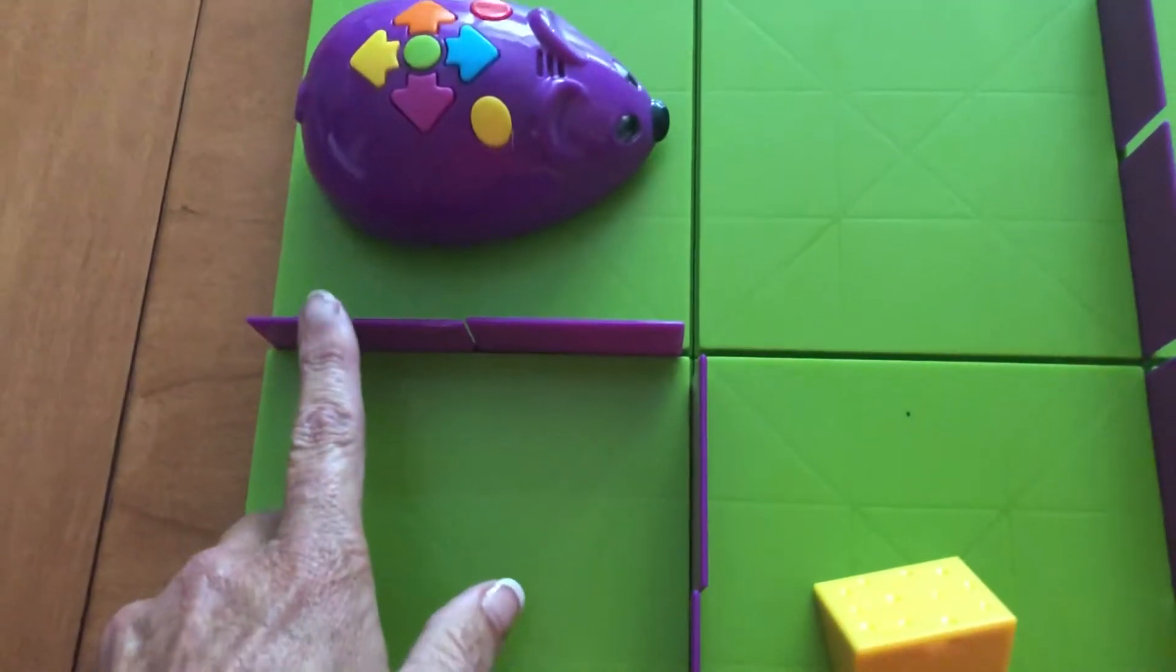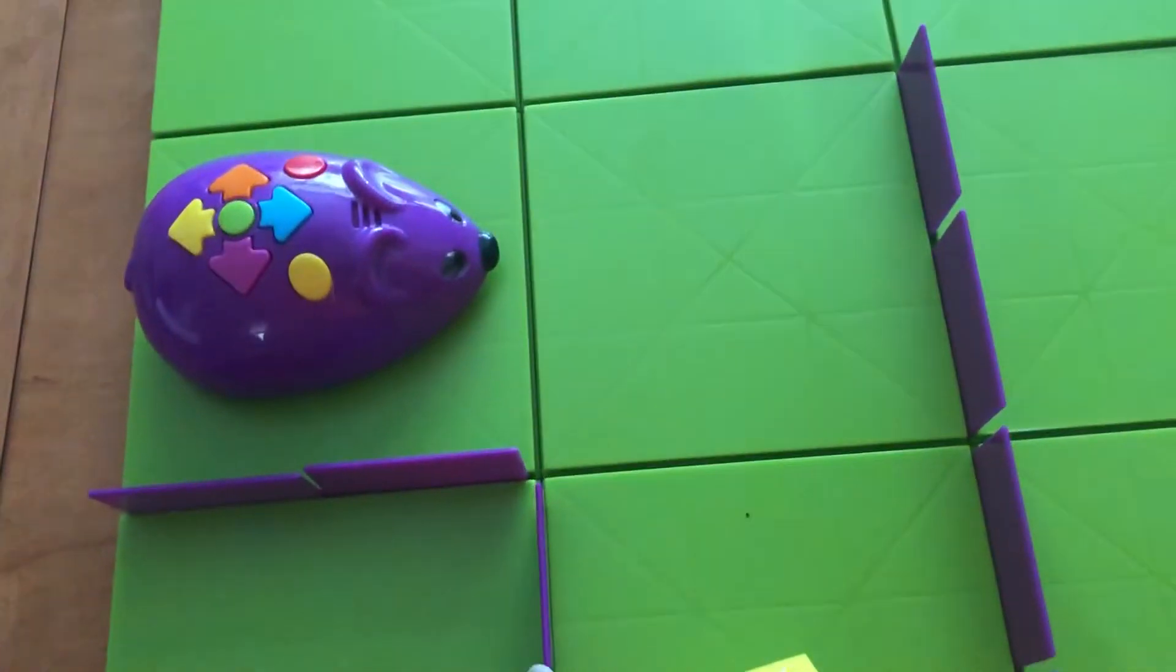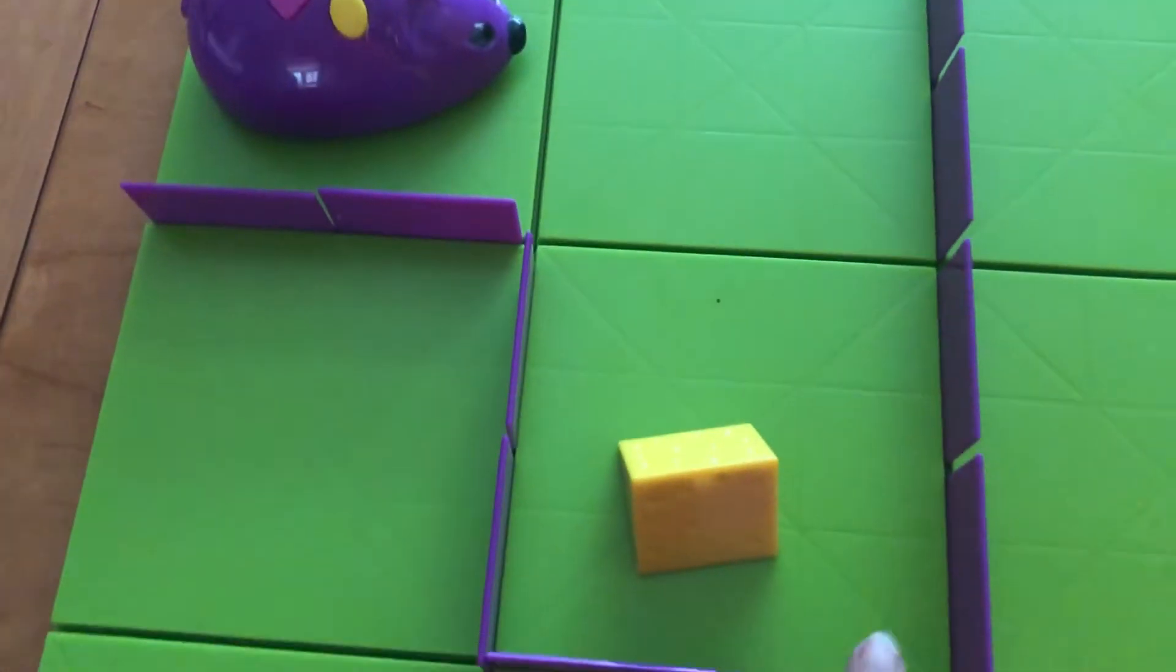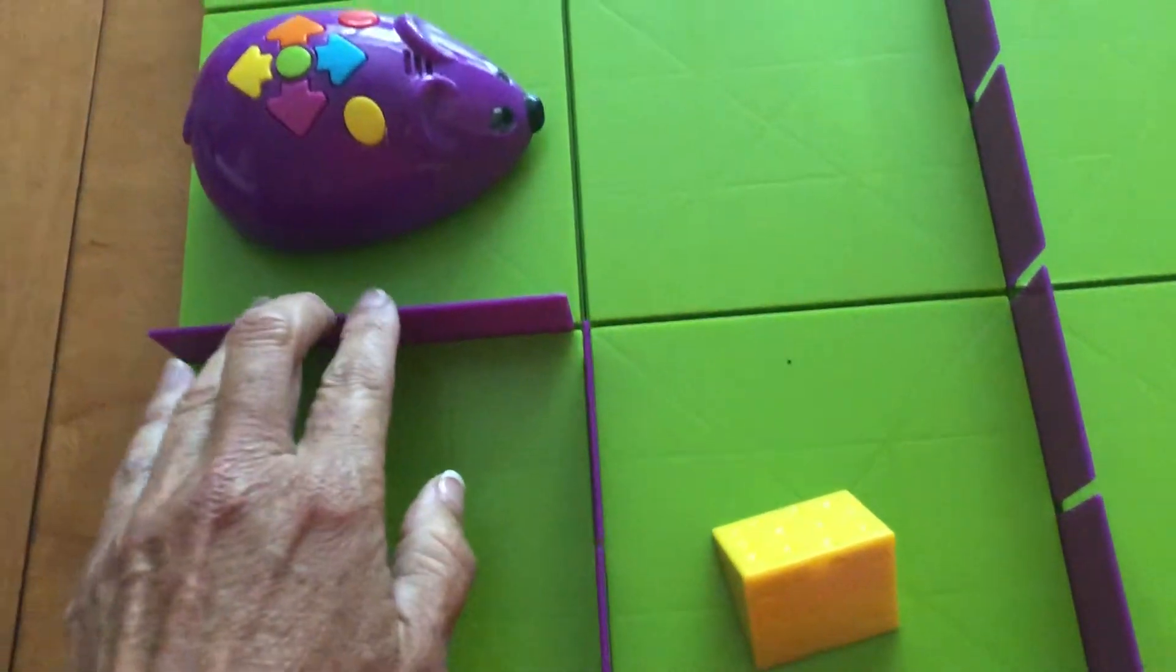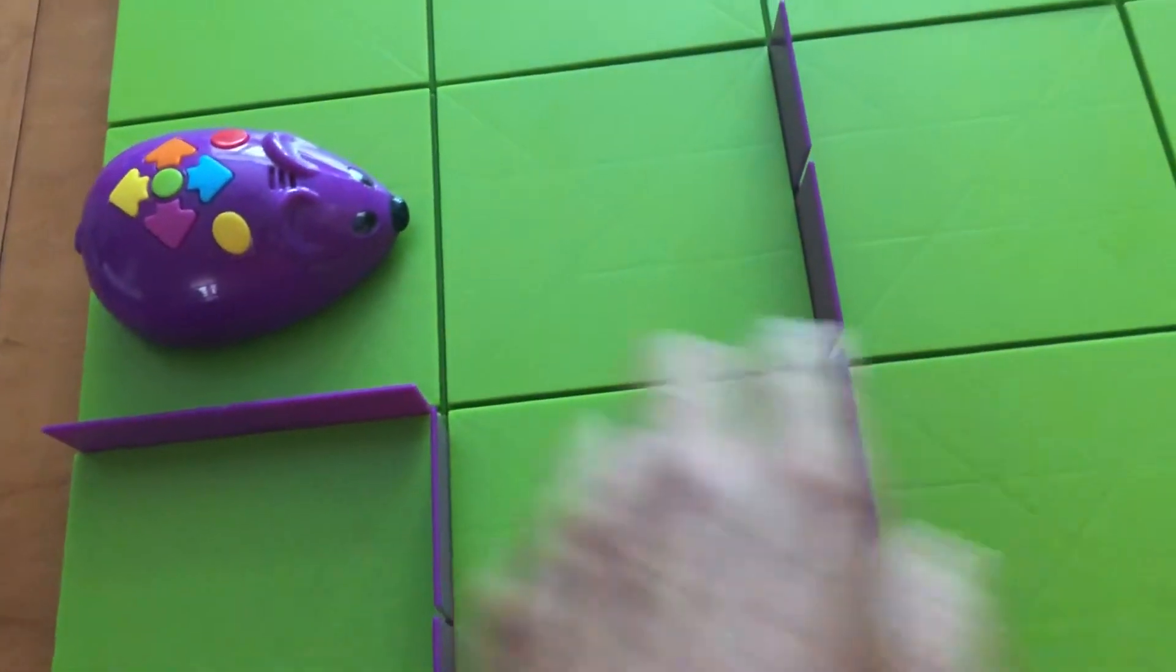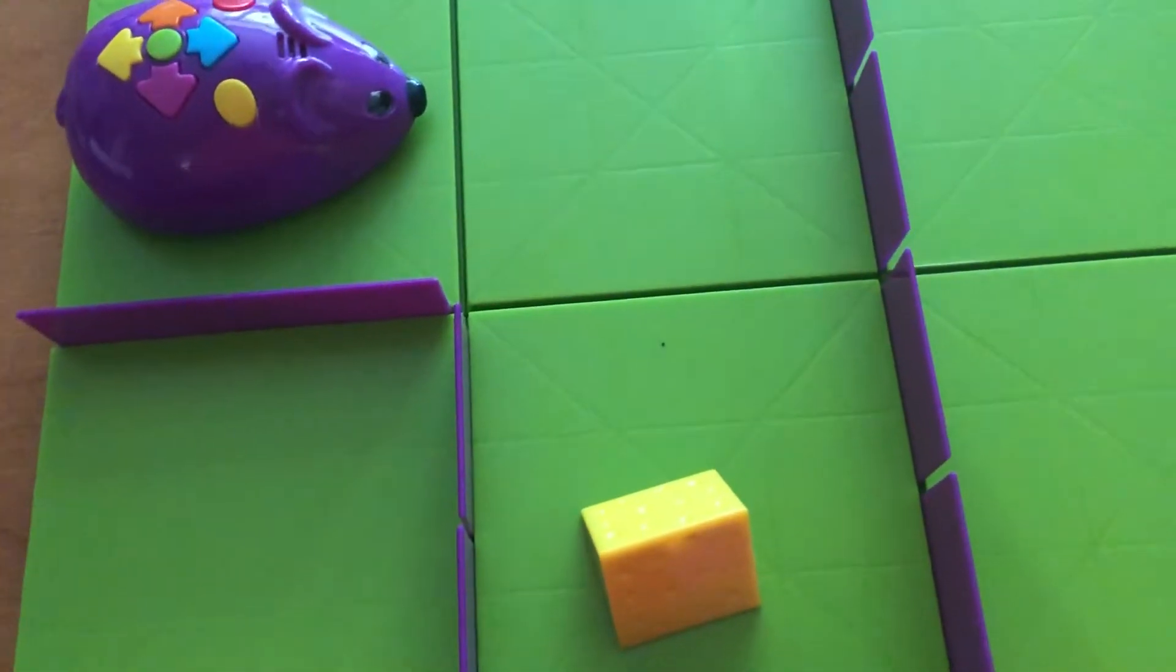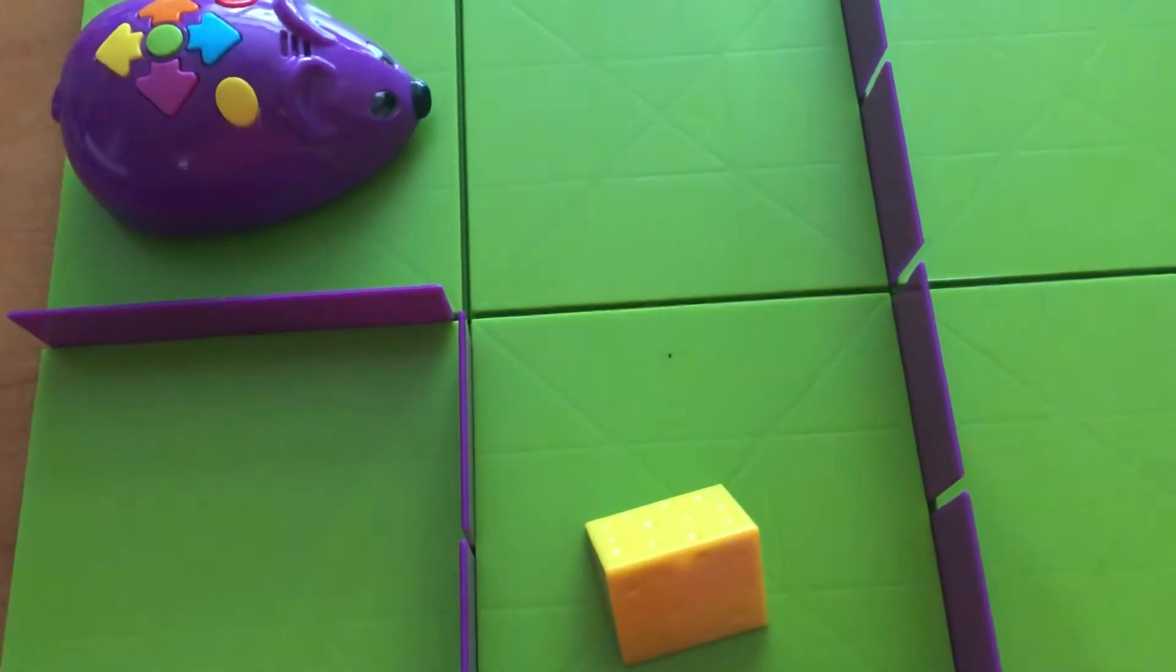I have added walls to separate these different squares so that the mouse cannot turn right when he's in the first square, and he cannot go more than one space forward without hitting a wall. The cheese is in row three, column two.